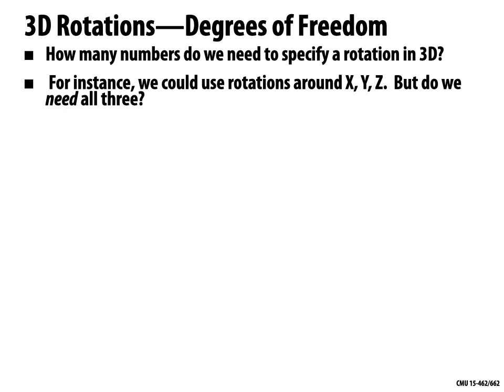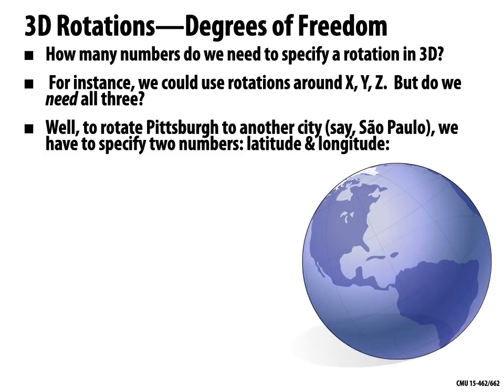Let's think about this more geometrically. Imagine we want to perform a rotation of the earth that takes our beautiful city of Pittsburgh to another city — let's say São Paulo. To do this, we know we have to specify at least two numbers. We have to say what's the latitude and the longitude of the city that we want to rotate Pittsburgh to.